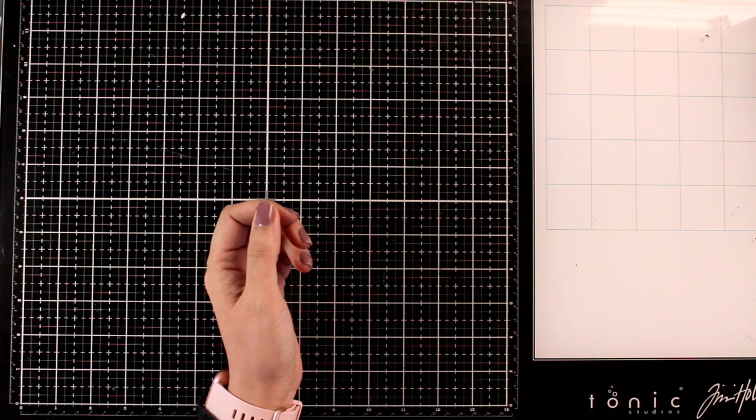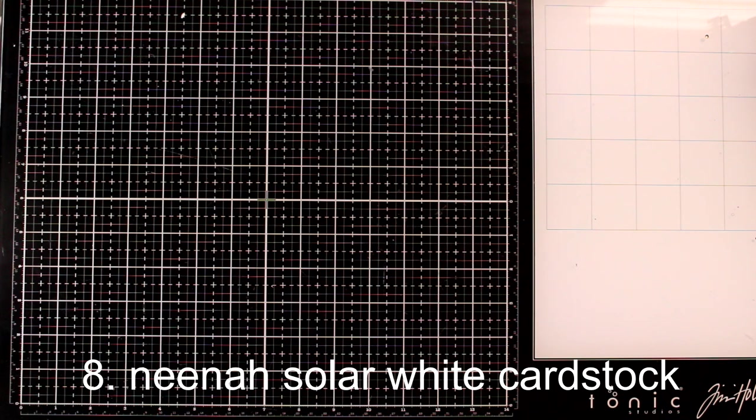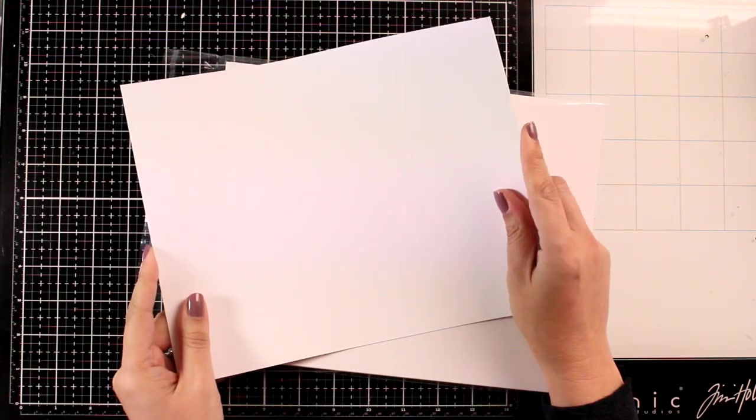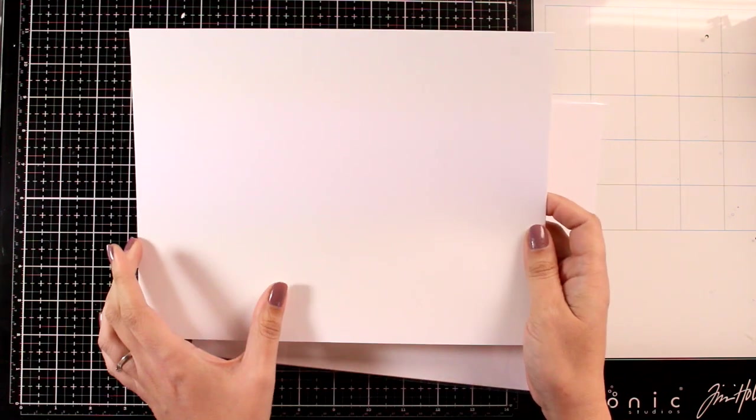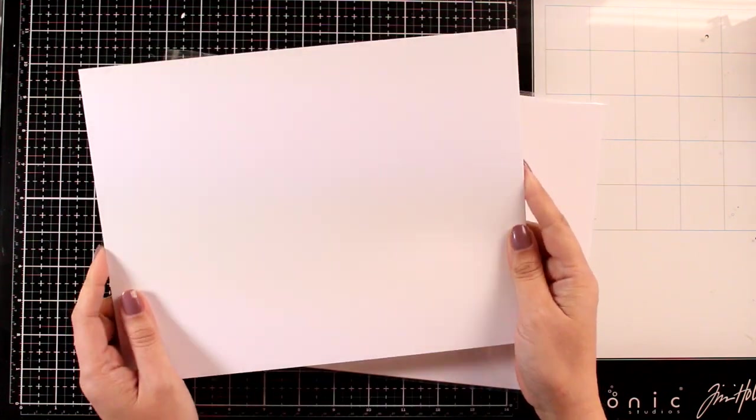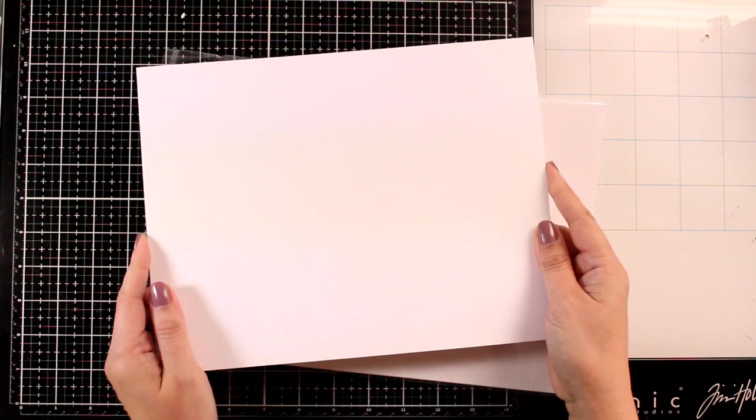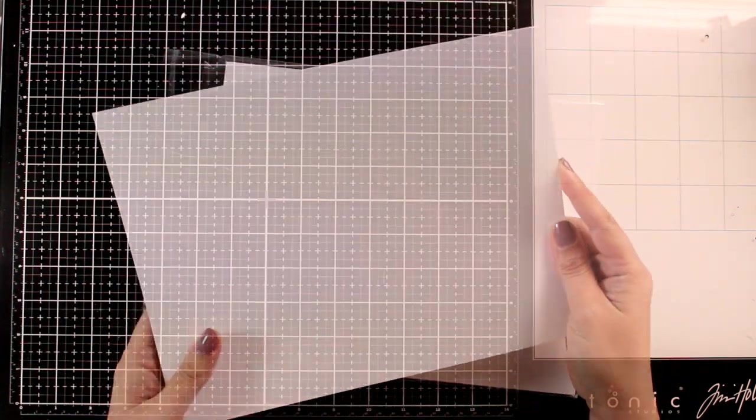Of course, I have to mention white paper. My all-time favorite is Neenah Solar White cardstock. I tend to grab it in 80 pounds for stamping, coloring, and ink blending, as well as 110 pounds for creating my card bases. Nice and sturdy. It's nice and smooth, really bright white. This is the best.